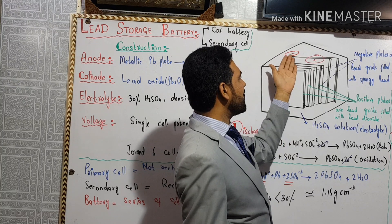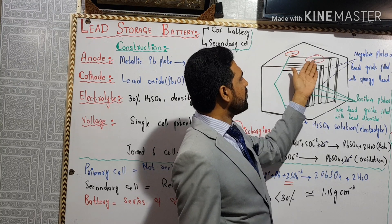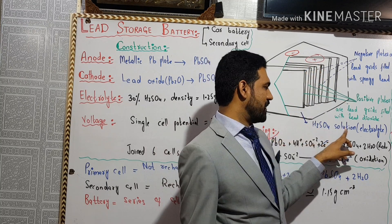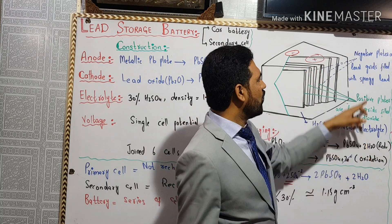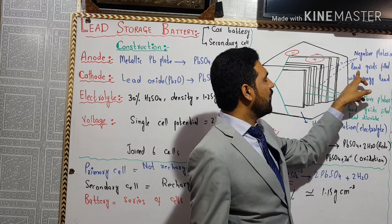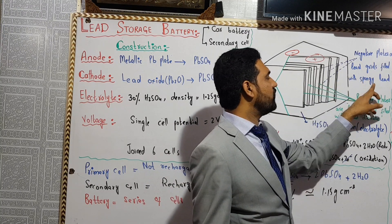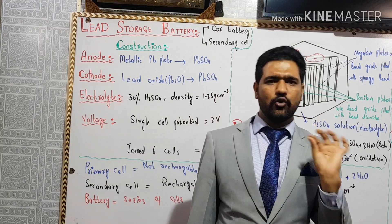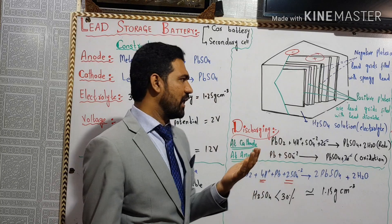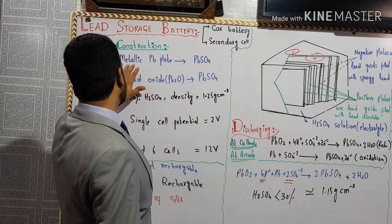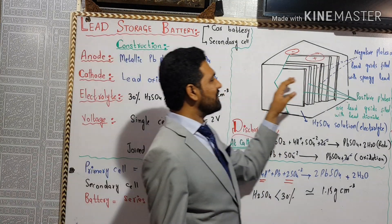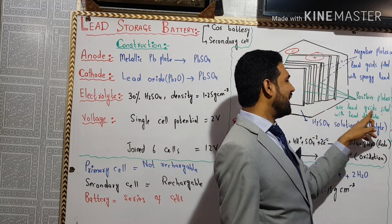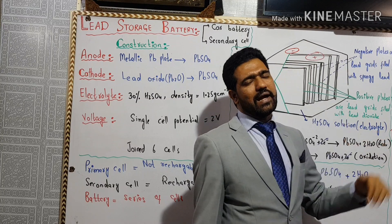This is the cathode and this is the anode. This electrode is coated with the electrolyte solution and this electrode is filled with lead oxide.